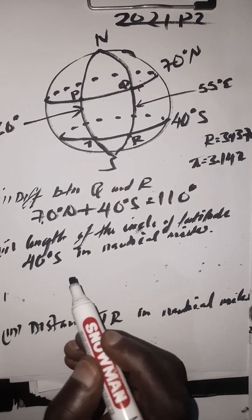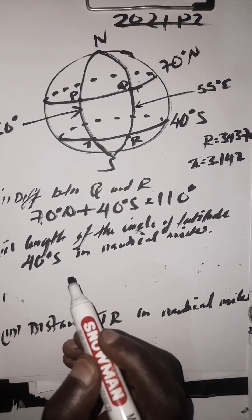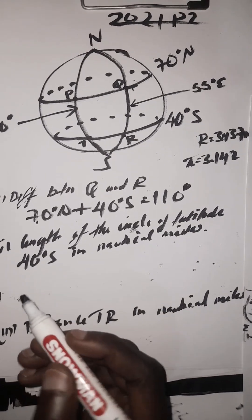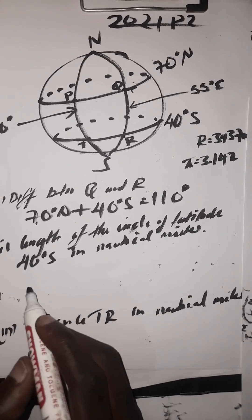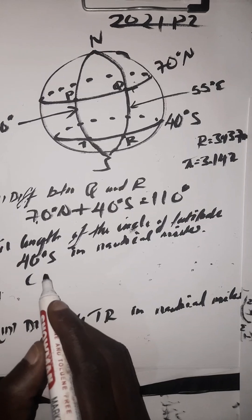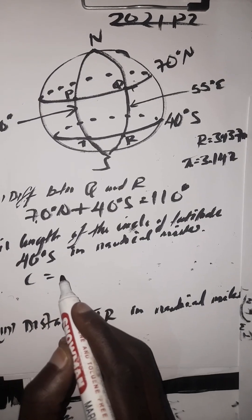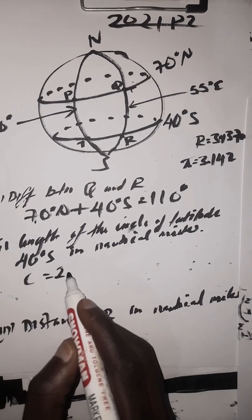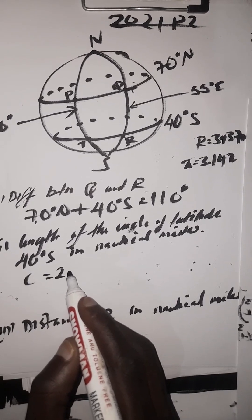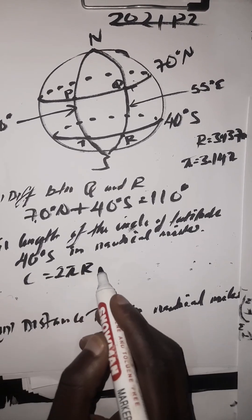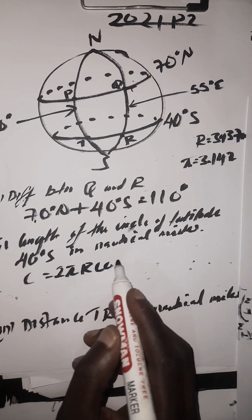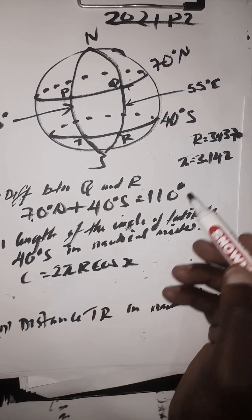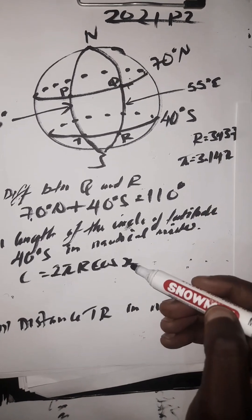Secondly, we are asked to find the length of the circle of latitude 40 degrees south in nautical miles. The length of a circle of latitude is the same as its circumference. The circumference of a small circle is given by the formula 2πr·cos(x), where r is the radius of the earth which is 3437, and x is the latitude, which is 40 degrees.